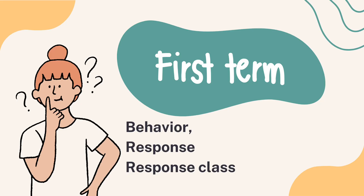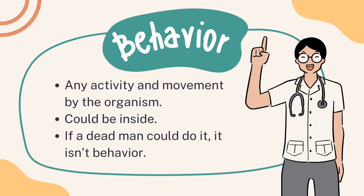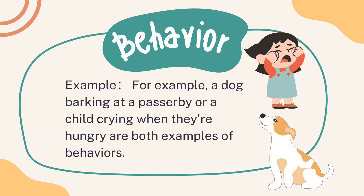Our first term covers behavior, response, and response class. Behavior refers to any observable action or reaction made by an organism in response to its environment. For example, a dog barking at a passerby or a child crying when they're hungry are both examples of behaviors.